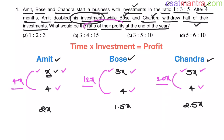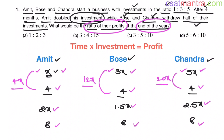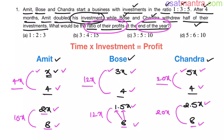The total duration is 1 year. 4 months already passed, so 8 months remain for everyone. For the next 8 months, their profits are: time × investment = 8 × 2x = 16x for Amit; 8 × 1.5x = 12x for Bose; and 8 × 2.5x = 20x for Chandra.